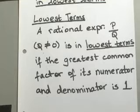When you are trying to write expressions or rational expressions in lowest terms, the idea is that between your numerator and denominator, your greatest common factor should be 1, nothing greater than 1.